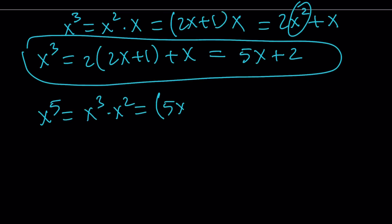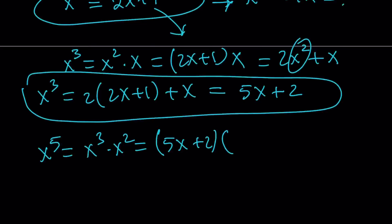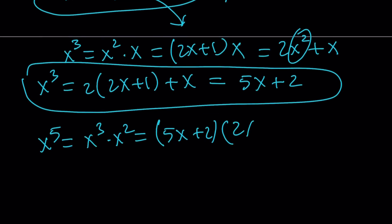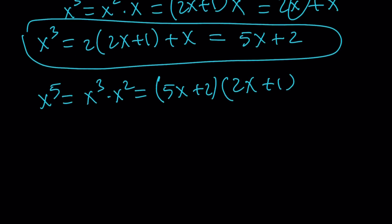x^3 is 5x + 2, and x^2 is 2x + 1. When you multiply these two things, you get 10x^2 + 5x + 4x, which is 9x, plus 2.